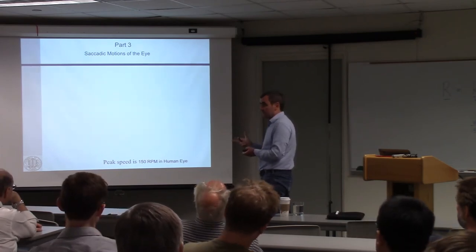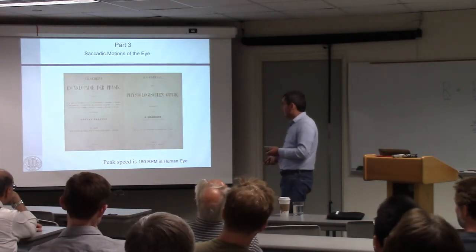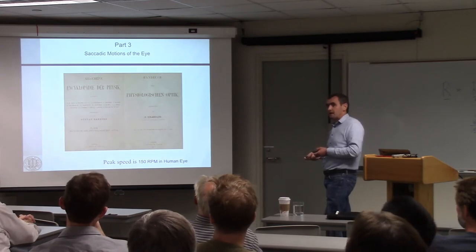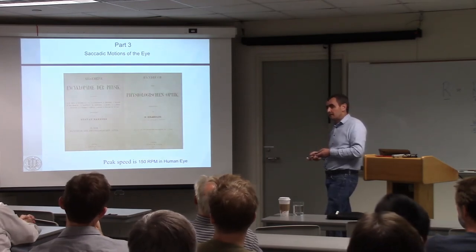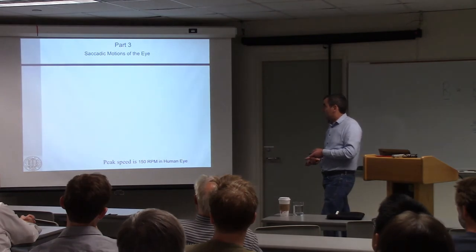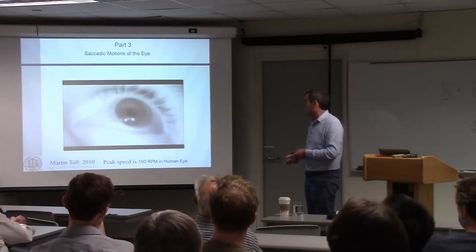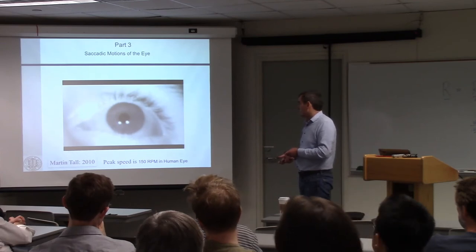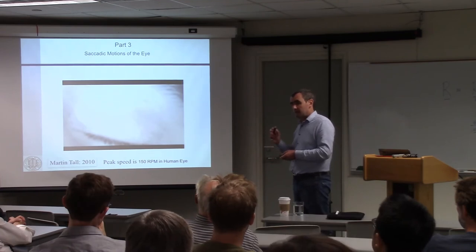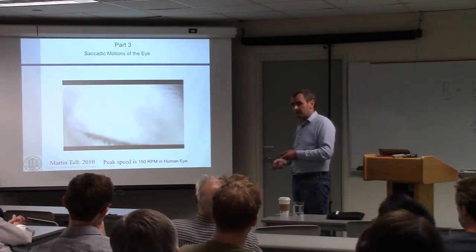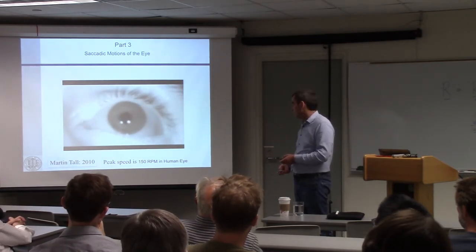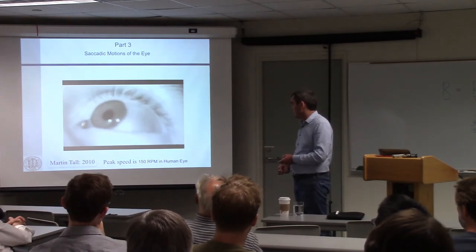After the first work on constant angular velocity motions, I missed a whole literature in ophthalmology. There's a remarkable book by Helmholtz in 1867 on the kinematics of the human eye with phenomenal results. The motions he's looking at are saccadic motions of the eye — just back and forth. They're very fast: the peak speed is 150 RPM in the human eye. Some species of monkeys are slightly faster, but for motions of the human body, these are considered among the fastest.